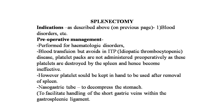Splenectomy indications include blood disorders and other neoplastic, miscellaneous, bacterial, viral, and protozoal conditions. Preoperative management: blood transfusion is performed for hematological disorders but is avoided in ITP (idiopathic thrombocytopenic purpura). Platelet packs are not administered preoperatively as these platelets are destroyed by the spleen and become ineffective. Platelets should be kept on hand to be used after removal of the spleen. A nasogastric tube is placed to decompress the stomach and facilitate handling of the short gastric veins within the gastrosplenic ligament.